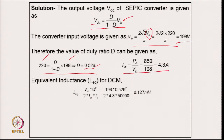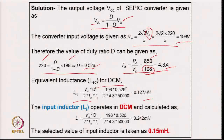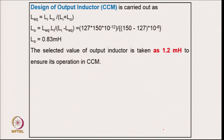The input average current from power and input average voltage is 4.3 A. From the DCM equivalent inductance relation the equivalent inductance for this converter is 0.127 mH. The input inductor for discontinuous conduction mode comes to 0.242 mH. Since this is DCM, the inductor must be selected lower than this value to ensure discontinuous current in the inductor under all operating conditions; 0.15 mH is selected.